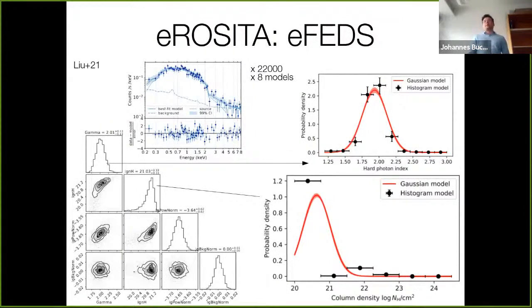I want to also highlight eROSITA where recently we've released the eFEDS field with 22,000 AGN in there which we've analyzed with eight models so you can imagine the computational complexity. You really need a good inference machine that can deal with this. We have the x-ray spectra in blue here, get probability distribution for each model, and then you want to do sample distributions like shown here on the bottom right.